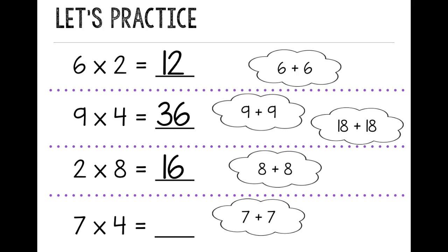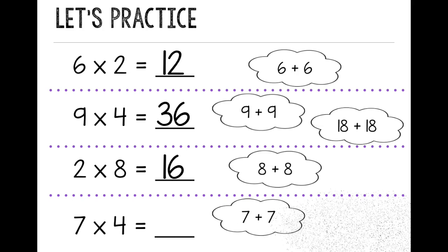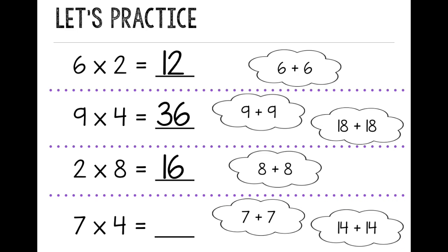So now I'm going to double 14. 14 plus 14. And again, just like with 9 times 4, if I need to rewrite 14 plus 14 going vertically to help me add, feel free to do so. And then add it up. And since 14 plus 14 equals 28, I know that 7 times 4 equals 28.